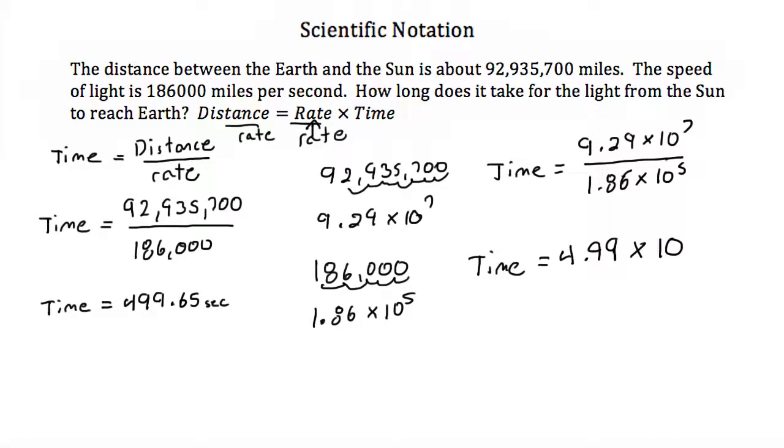When you have the same number to a power divided by the same number to a different power, you can just subtract your exponents. So if I have 10 to the 7th and then 10 to the 5th, I could subtract the 7 and the 5 and I would get 10 to the 2.